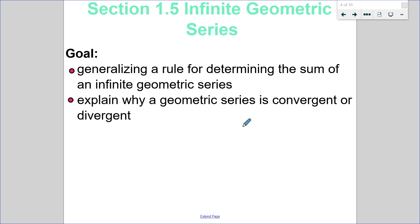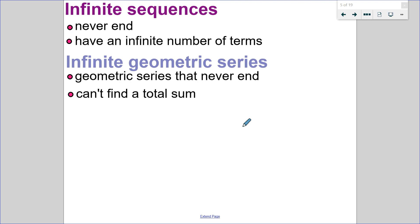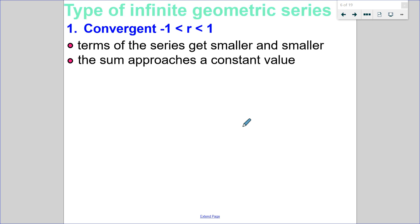In order to do that, I need to introduce you to infinite geometric series. Sections 1.1 to 1.4 all dealt with finite, meaning ending, series. Now we're going to look at something that doesn't have an end. An infinite sequence is a sequence that never ends — it has an infinite number of terms. There are two types of infinite geometric series. There are convergent series, where the terms get smaller and smaller and converge upon or approach a constant value. That's going to happen anytime the ratio is between negative 1 and positive 1.